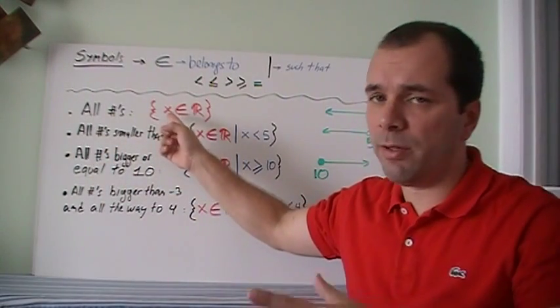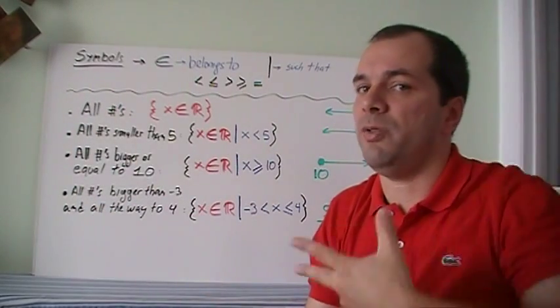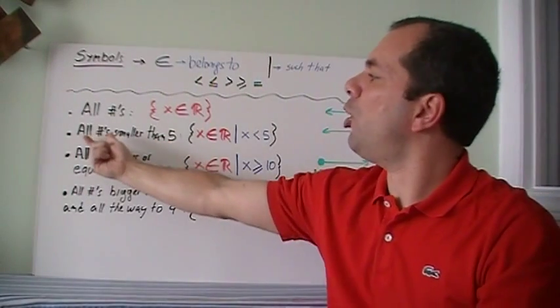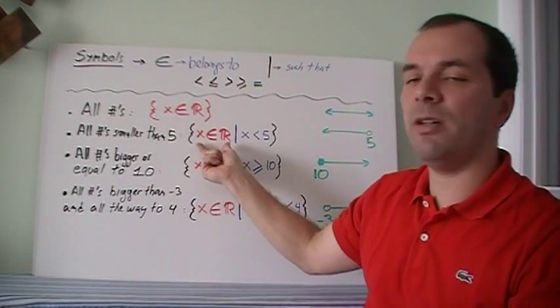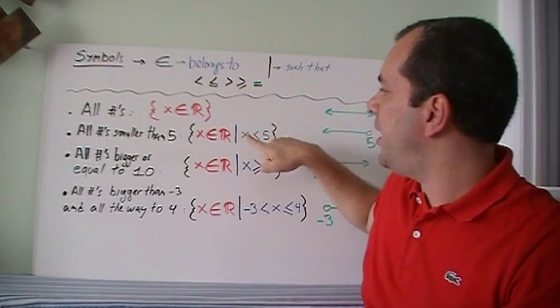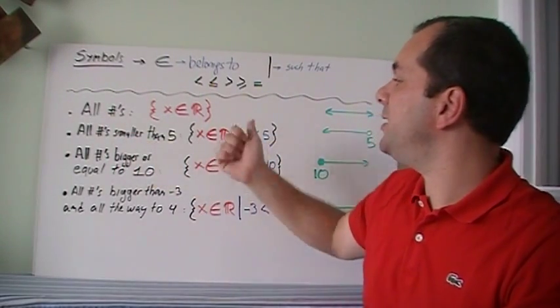Now I'm using variable x here for explanation, but that's for domain. If I was using range, I'd be using y belongs. So how do you say all numbers smaller than 5? Well, we said all numbers, so that means x belongs to the real numbers. And now we use the line, such that x is less than 5.